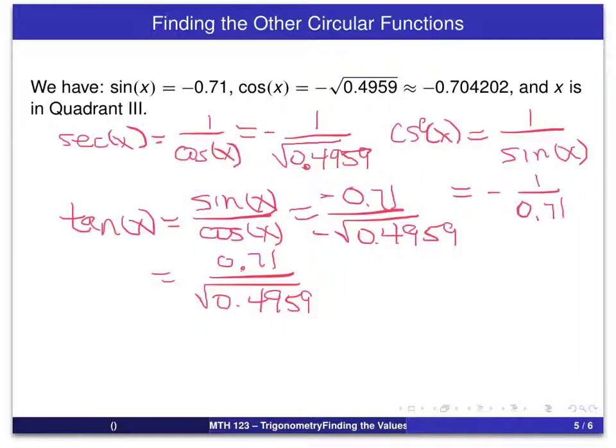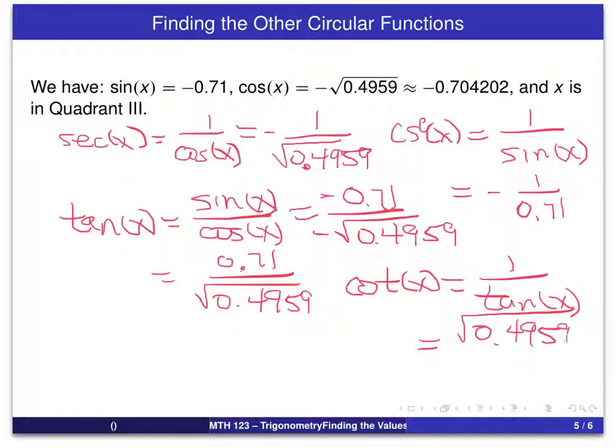And finally, the cotangent of x we will complete as 1 over the tangent of x. That will be a positive number and will be the square root of 0.4959 divided by 0.71. And there we have now determined the six values of the circular functions.